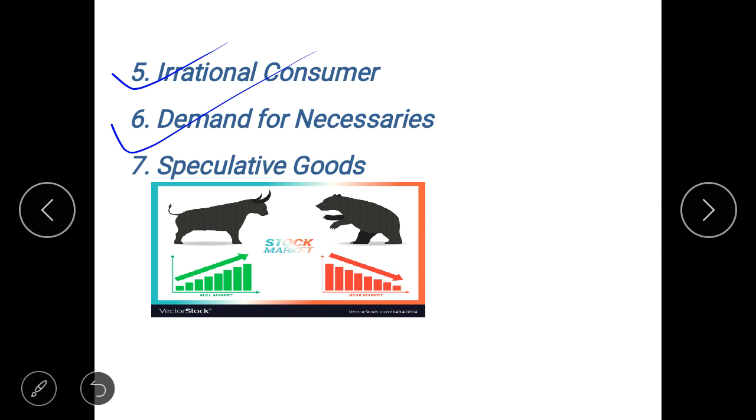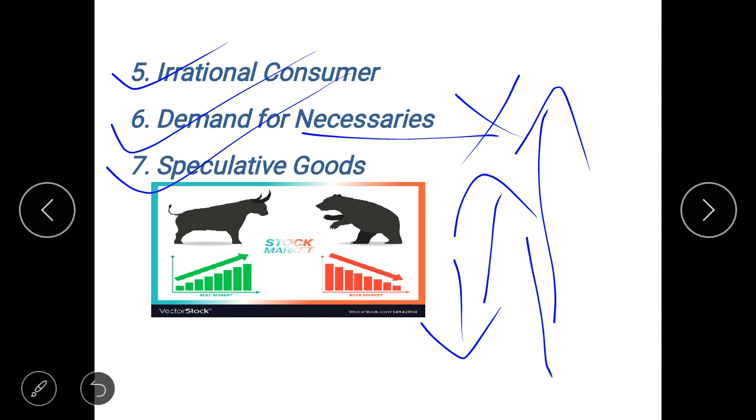Now the last one is your speculative goods. So your speculative goods are your share and stock market. These markets they run on sentiments. Whenever the price of the shares or the stock increases, then the demand for those shares and stock also increases. And whenever the price decreases, the demand also decreases. So this is in direct contradiction to your law of demand.